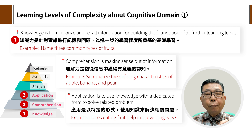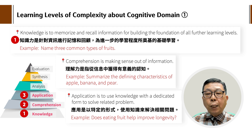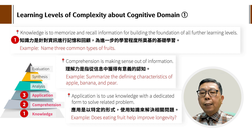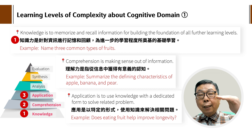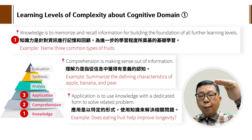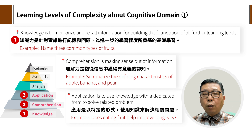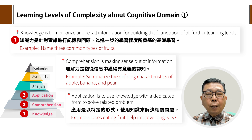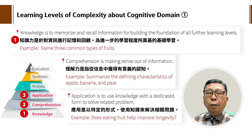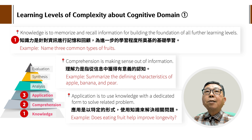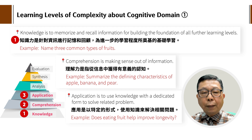第一个——知识（Knowledge），就是针对资讯进行记忆跟回顾，用了两个英文单词：memorize跟recall，为进一步的学习程度所奠基的一个基本学习。所以这是一个hierarchical的分层结构，一个阶层一个阶层上去。例子是：name three common types of fruits，就是你能够把常看到的水果说出来、name出来。